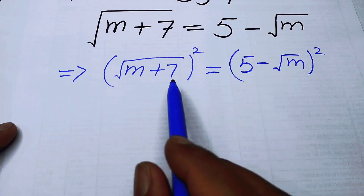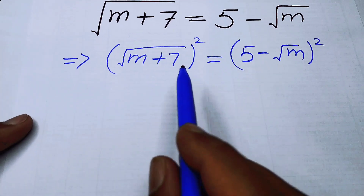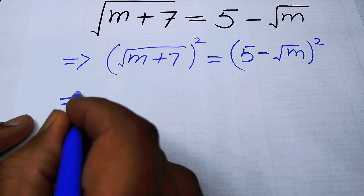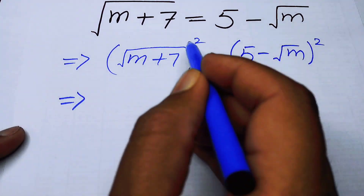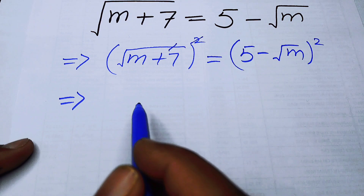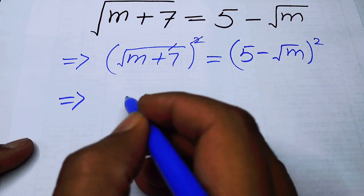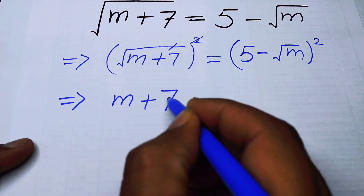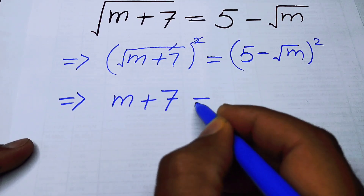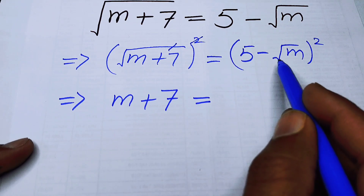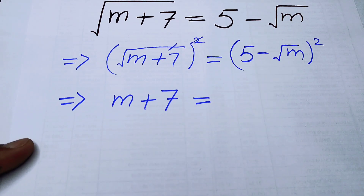If you focus on the left hand side, you can see that the square and square root undo each other, and here we obtain m+7 on the left hand side. On the right hand side we have (5 - √m) squared.